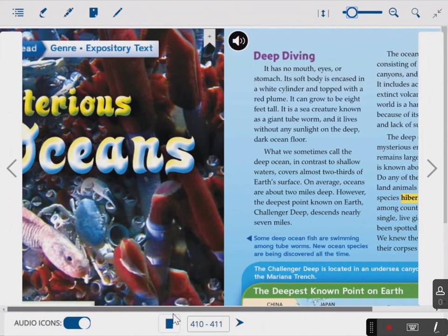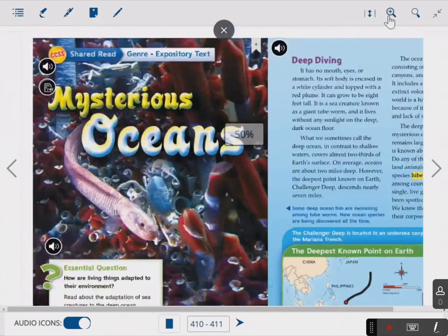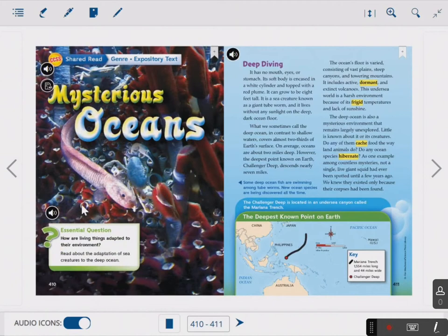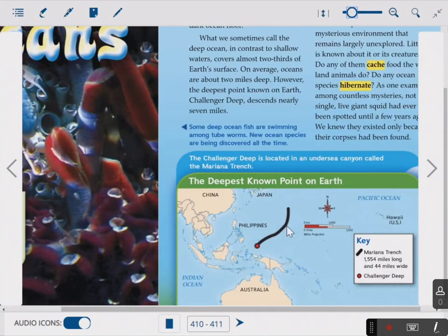And it points to the picture here. The caption says some ocean fish are swimming among tube worms. New ocean species are being discovered all the time. So that looks like a fish with tube worms. I don't know if that's the fish or if that's the tube worm. That kind of looks like a tube worm to me. Either way, it's pretty gross. It says the Challenger Deep is located in an undersea canyon called the Mariana Trench. And you see here in the black, that's the Mariana Trench. And then right here is Challenger Deep, which it says descends nearly seven miles. Alright, let's go to the next page.